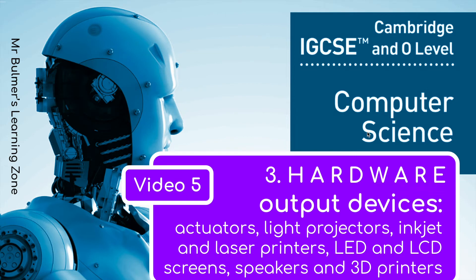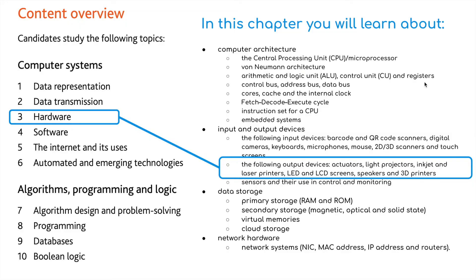Video 5 from Topic 3 Hardware from the Cambridge Computer Science iGCSE course. In this video we'll be looking at the following output devices: actuators, light projectors, inkjet and laserjet printers, 3D printers, LED and LCD screens, and loudspeakers.